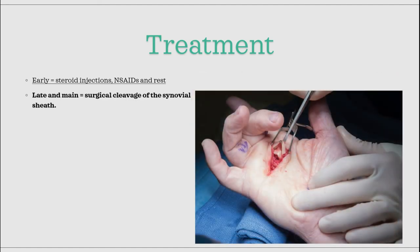Later, when the symptoms are more permanent and severe, surgery is the way to go. The surgery is quite simple — what you do is cleave the synovial sheath at the affected area so the tendon gets released. If successful, the tendon will again be able to glide normally so normal function will be resumed.